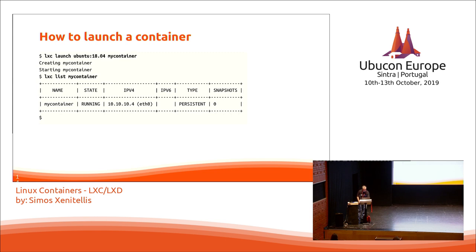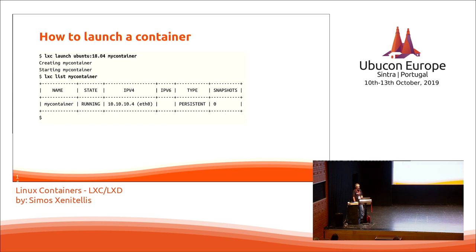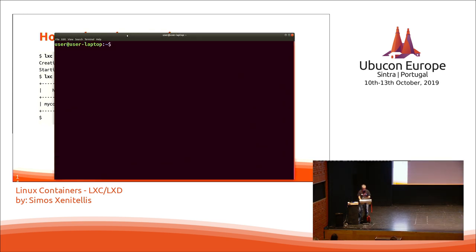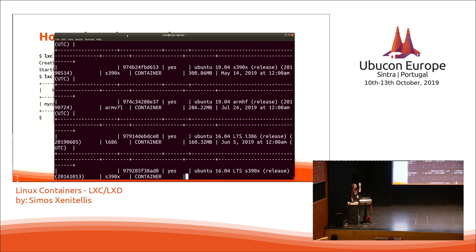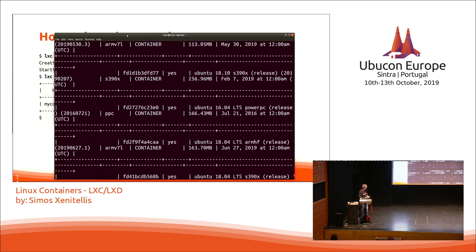Let's try to do this live. The lxc image list command shows the contents of a repository of container images. Here we can see the full list of available container images — it's a very big list, so you will have to scroll back to see more information.